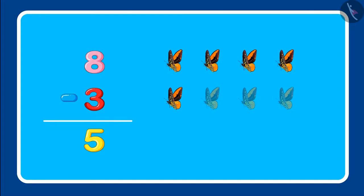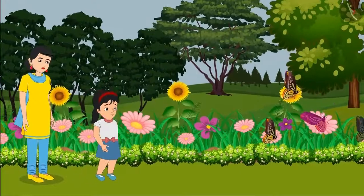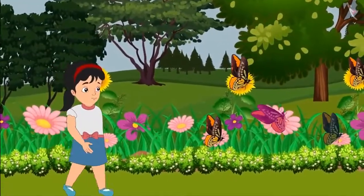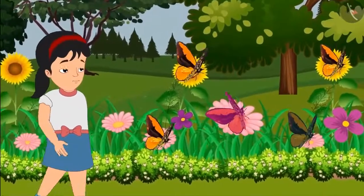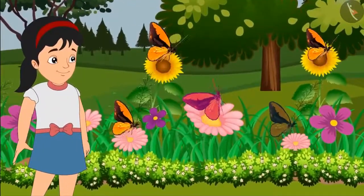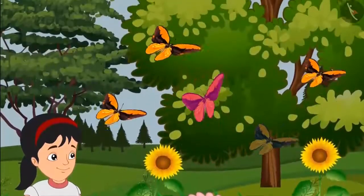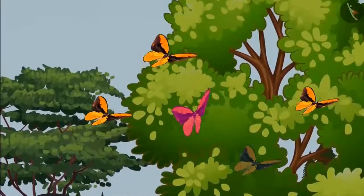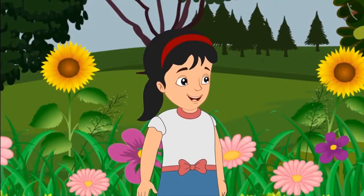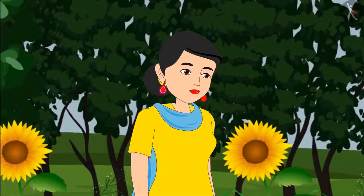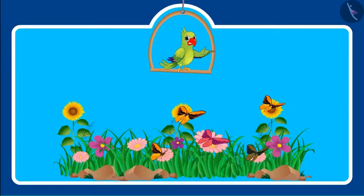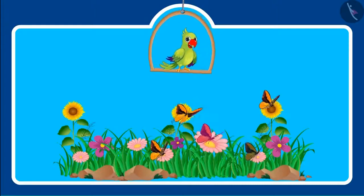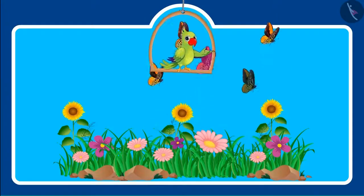Now Pinky goes a little more close to the flowers to see the remaining 5 butterflies more closely. As soon as she goes near the flowers, all 5 butterflies fly away. Oh, Mommy! All 5 butterflies flew away. Don't worry, Pinky. There are so many butterflies in this garden; you will see them on some other flower. So children, now can you tell me if out of the 5 butterflies all 5 flew away, then how many butterflies are left?